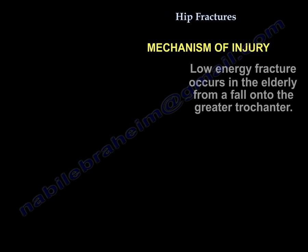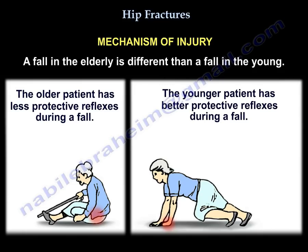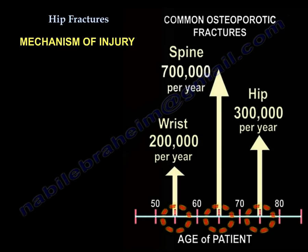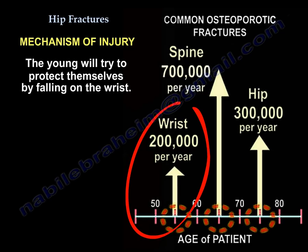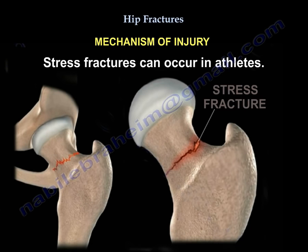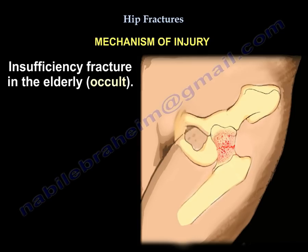The mechanism of injury: low energy fracture occurs in the elderly from a fall onto the greater trochanter. The fall pattern differs between age groups — wrist fractures occur in a younger group than hip fractures: wrist fractures followed by spine fractures followed by hip fractures. The young will try to protect themselves by falling on the wrist. High energy fractures occur in both the young and the elderly from a fall or a car accident. Stress fractures can occur in athletes. Insufficiency fractures occur in the elderly and are usually occult.